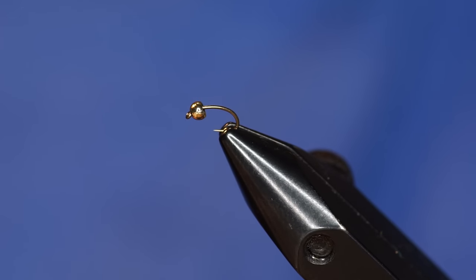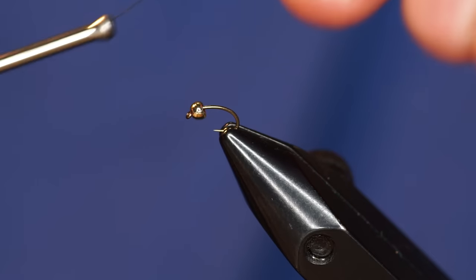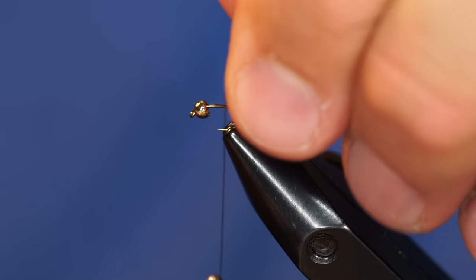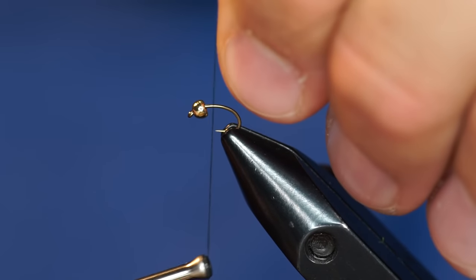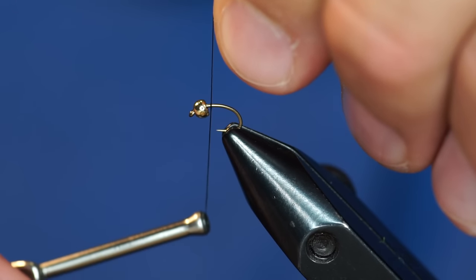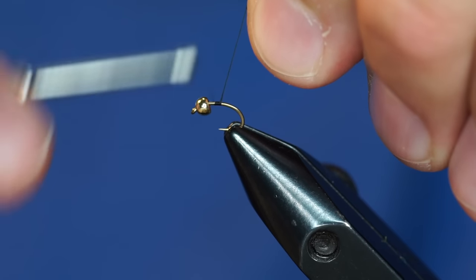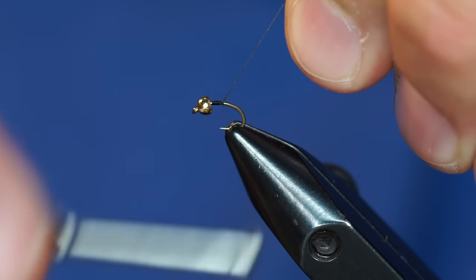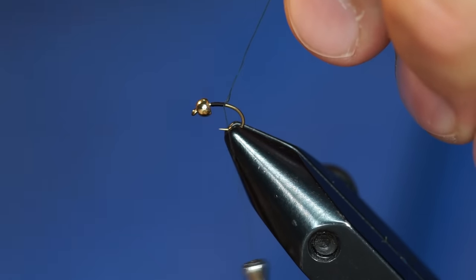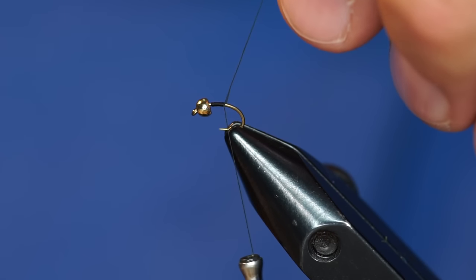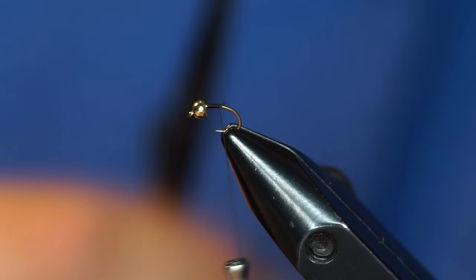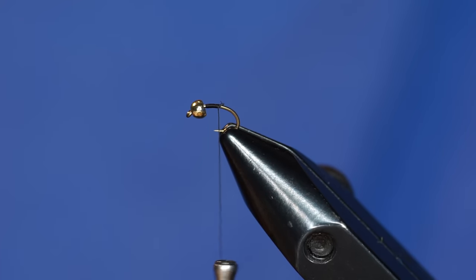I'm going to take my thread and hold the tag end up with my bobbin down low. I'm going to come in from behind the hook, take a few wraps forward with my thread, and then wrap back over my wraps to start my thread. Now I can drop my bobbin and trim off the excess.